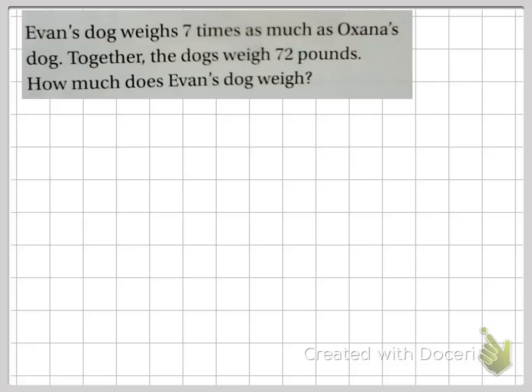Evan's dog weighs seven times as much as Ohana's dog. Together, the dogs weigh 72 pounds. How much does Evan's dog weigh? You can list key details instead of rewriting the whole word problem. Evan's dog equals seven times as much as Ohana's dog. They both equal 72 pounds. I'm going to underline that. Together, that's important, the dogs weigh 72 pounds. I'm going to set up a model.